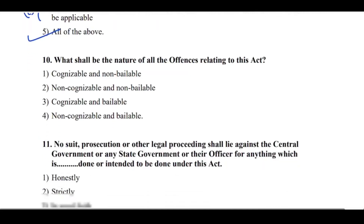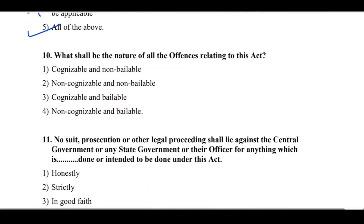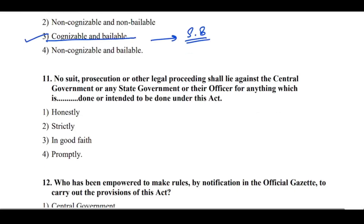Question No. 10: What shall be the nature of all offenses relating to this Act? Cognizable and bailable — Section No. 8. Question No. 11: No suit, prosecution or other legal proceedings shall lie against the Central Government or any State Government or their officer for anything which is done or intended to be done under this Act — the key word is 'in good faith.' Which section? Section No. 9.